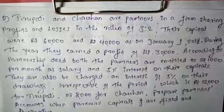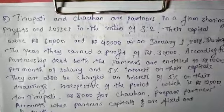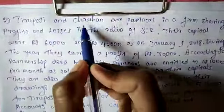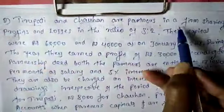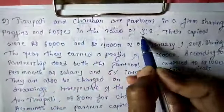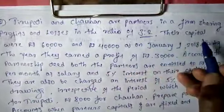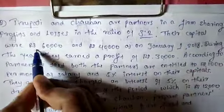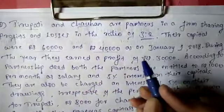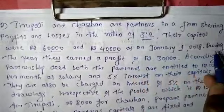Here is the second problem on fixed capital method and fluctuating capital method. Tirupati and Chauhan are partners in a firm sharing profits and losses in the ratio of 3 to 2. Their capitals were ₹60,000 and ₹40,000 initially as on January 1st, 2018.